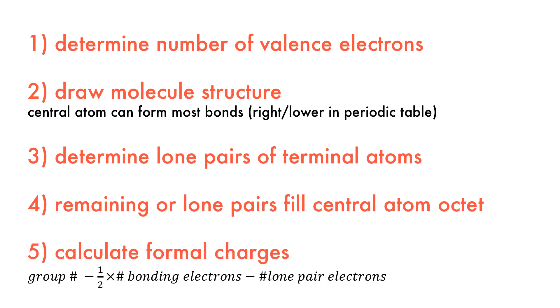Finally, we add the formal charges to each atom in the Lewis structure. This is the group number minus half of the number of bonding electrons minus the number of lone pair electrons. Let's get on to some examples.